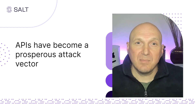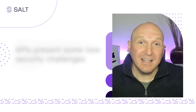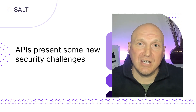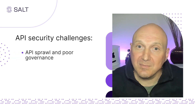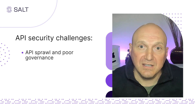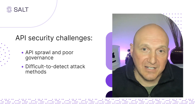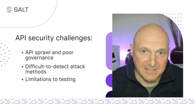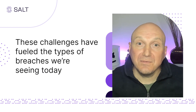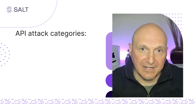But even with API security top of mind, we're still seeing cyber criminals finding success with this attack vector. Why is that? APIs present some new security challenges that threat actors are taking advantage of. Those challenges include a sprawling, always changing API attack surface with weak documentation and poor posture governance, unpredictable low and slow attack patterns that are difficult to detect with traditional technology defenses, and an inability to flush out all business logic flaws during automated testing cycles. These API security challenges have fueled the types of breaches we're seeing today, which typically fall into one of four API attack categories.